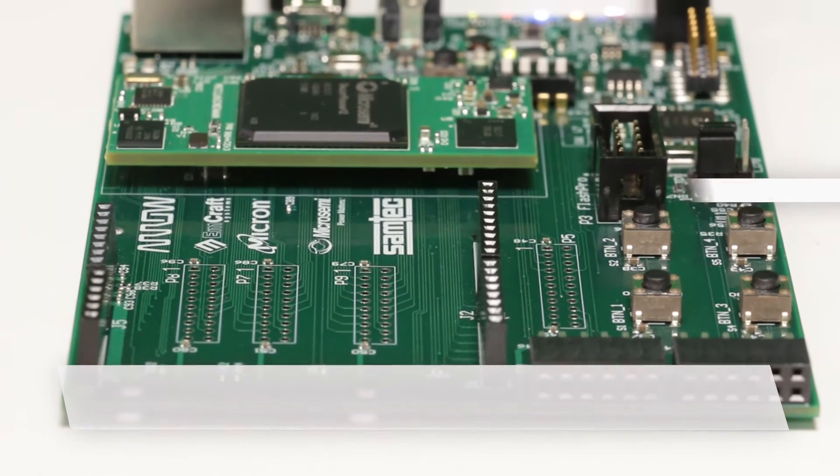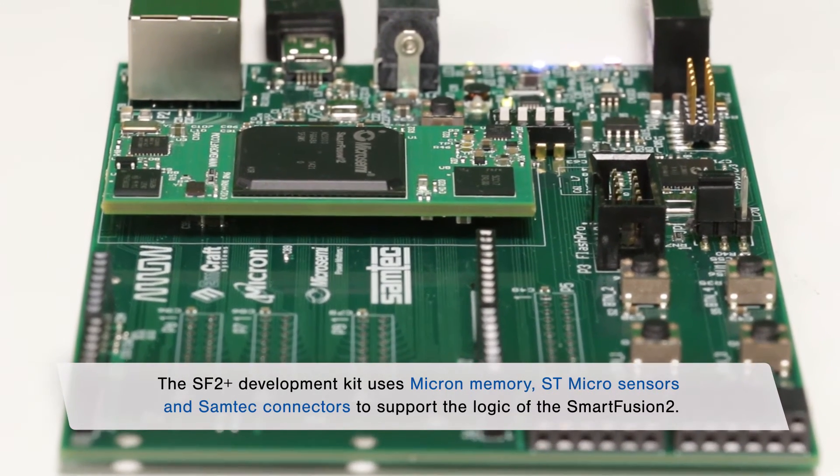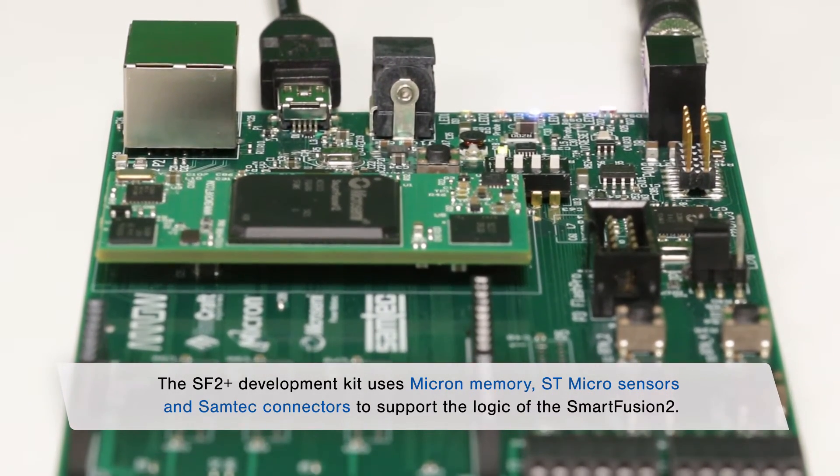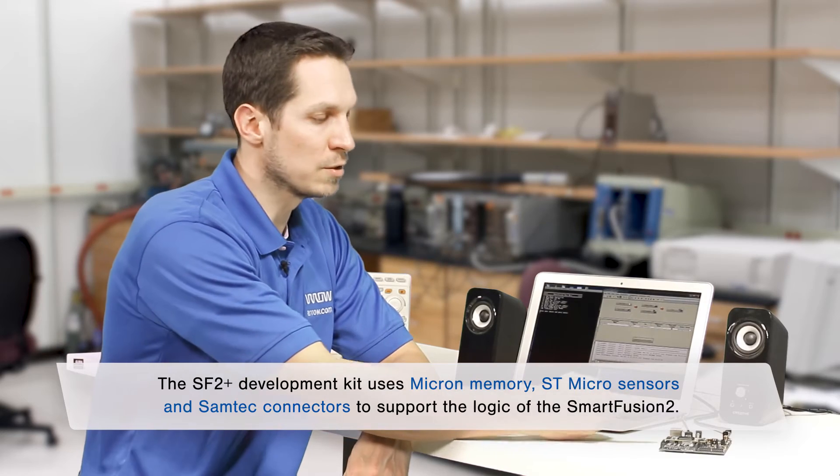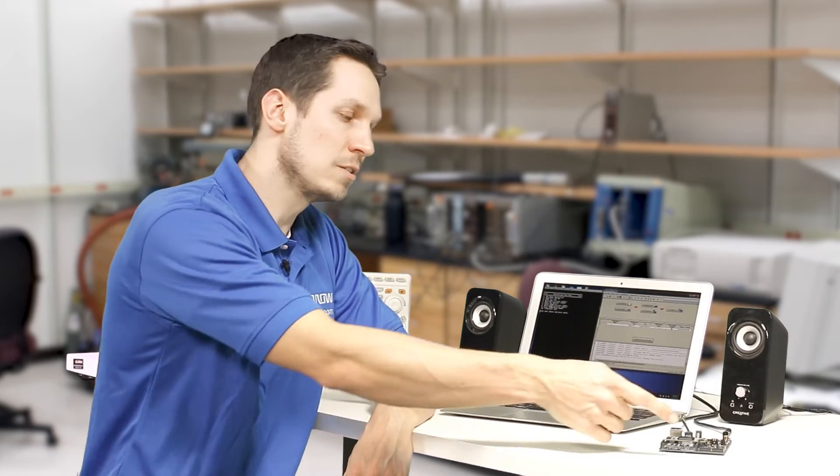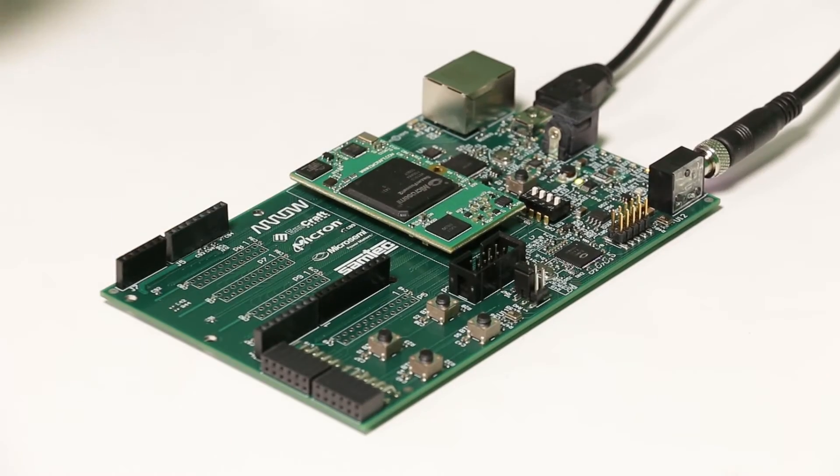Here we have the SF2 Plus Development Board that uses Micron Memory, STMicro Sensors, and Samtec Connectors to support the logic of the SmartFusion II. You can see we have headers that accept Arduino Shields, opening up that diverse ecosystem for full integration with the FPGA environment.